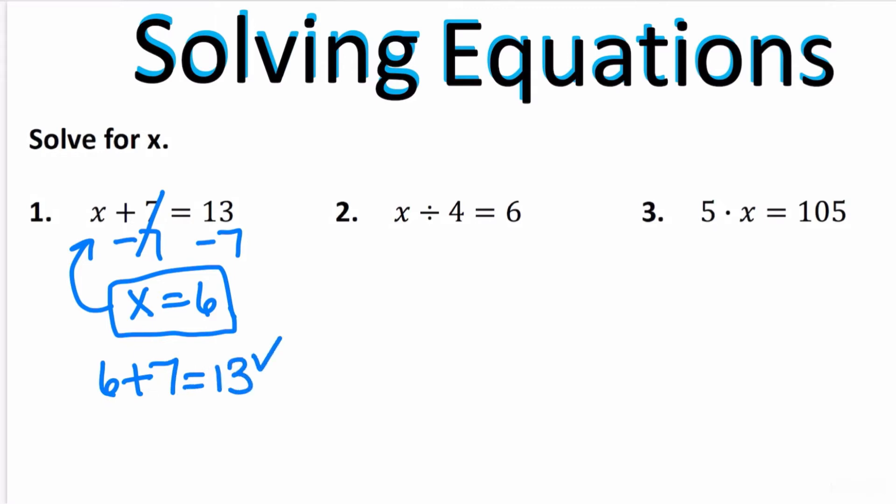In question number two, x, which basically means some number divided by 4, has to equal 6. Another way that you can see this written is x over 4 is equal to 6. Because you're dividing by 4, the opposite operation is to multiply. So you would multiply by 4 to both sides and then you get x is equal to 24.